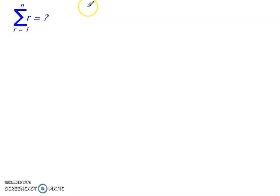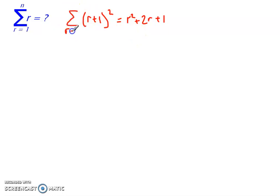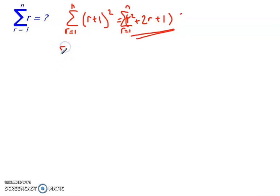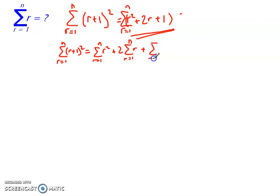Let's consider the identity (r+1)². Multiplying that out gives r² + 2r + 1. What I'm going to do is take the sums of both sides, putting both in a summation from r equals 1 to n. Using the rules of sigma notation I can split the right-hand side, so the sum of (r+1)² equals the sum of r² plus 2 times the sum of r plus the sum of 1.